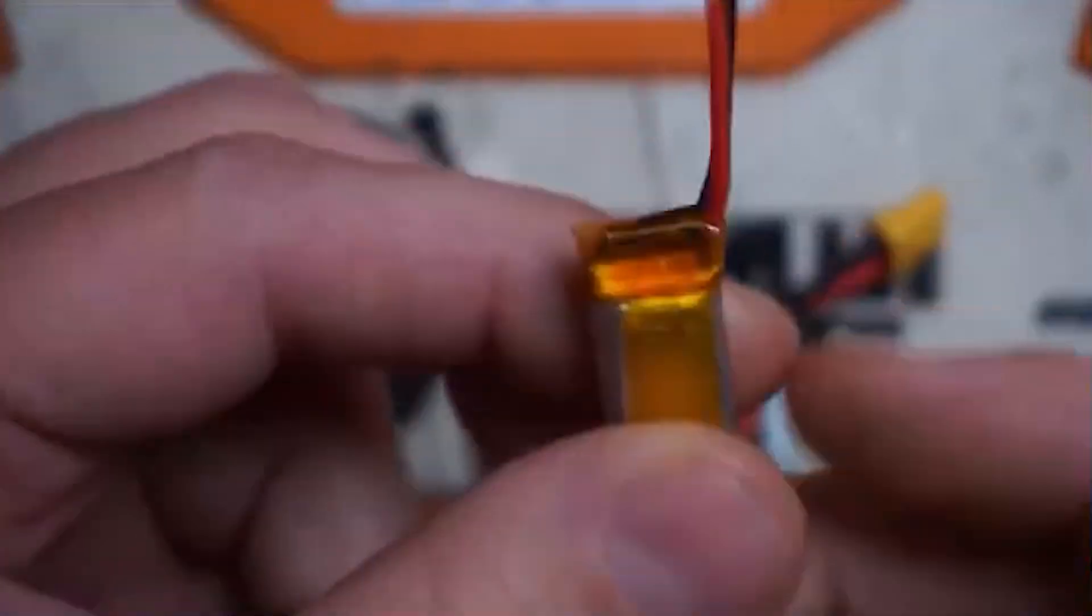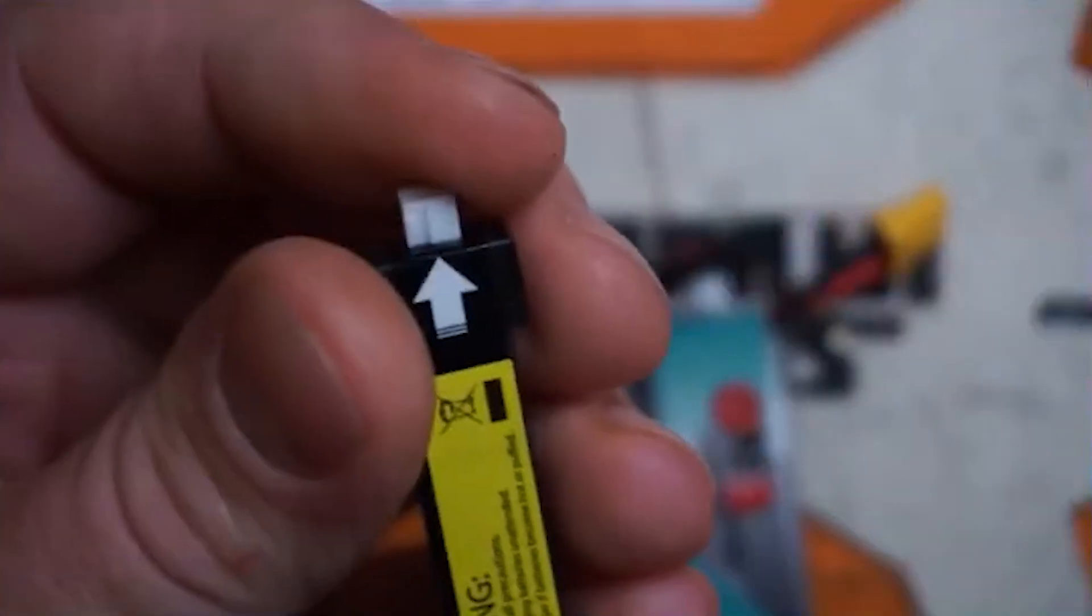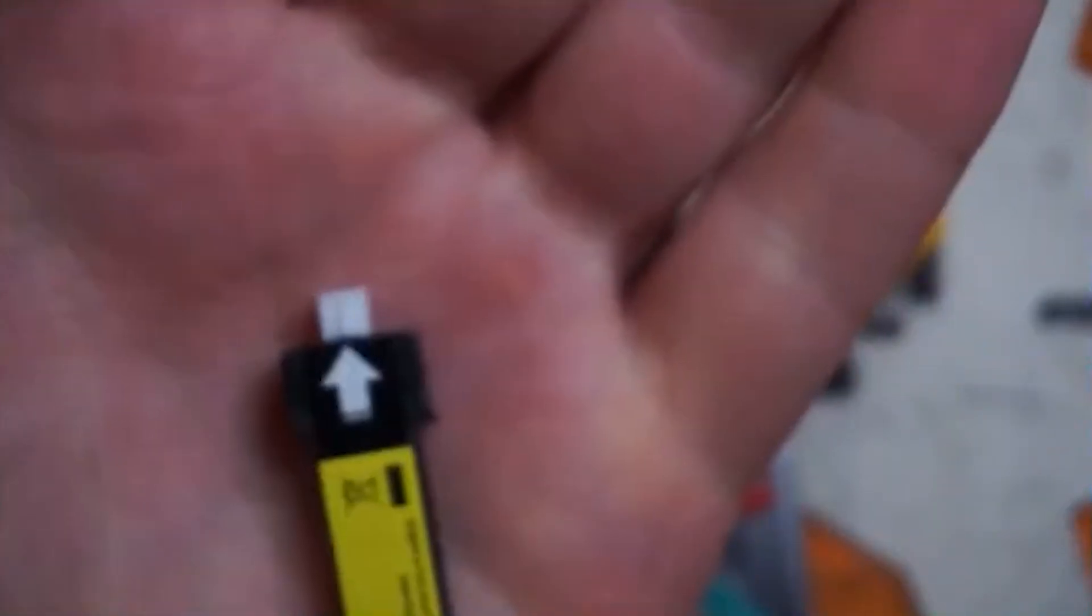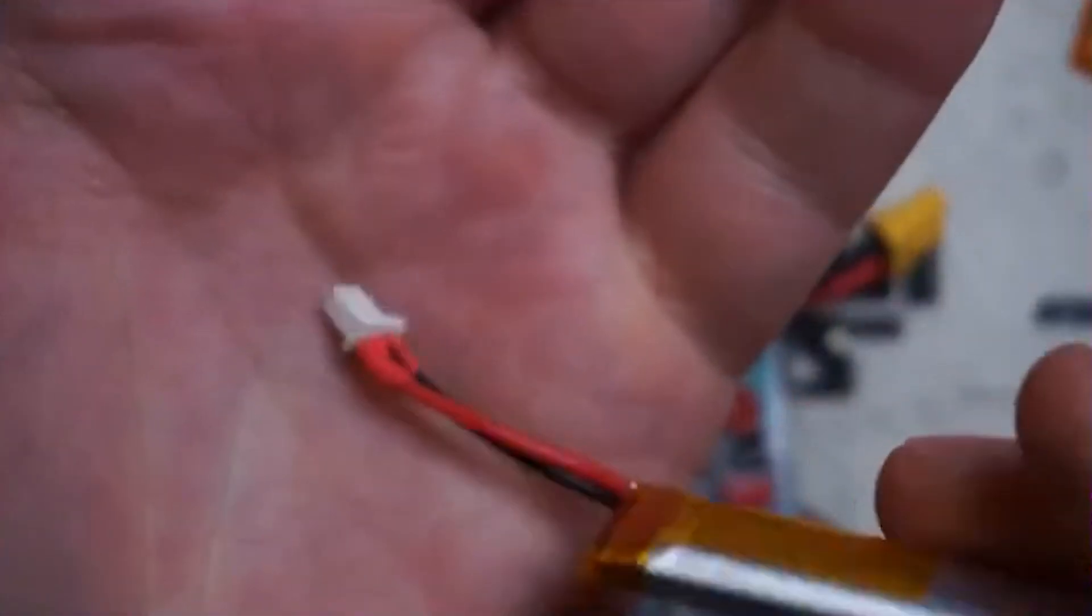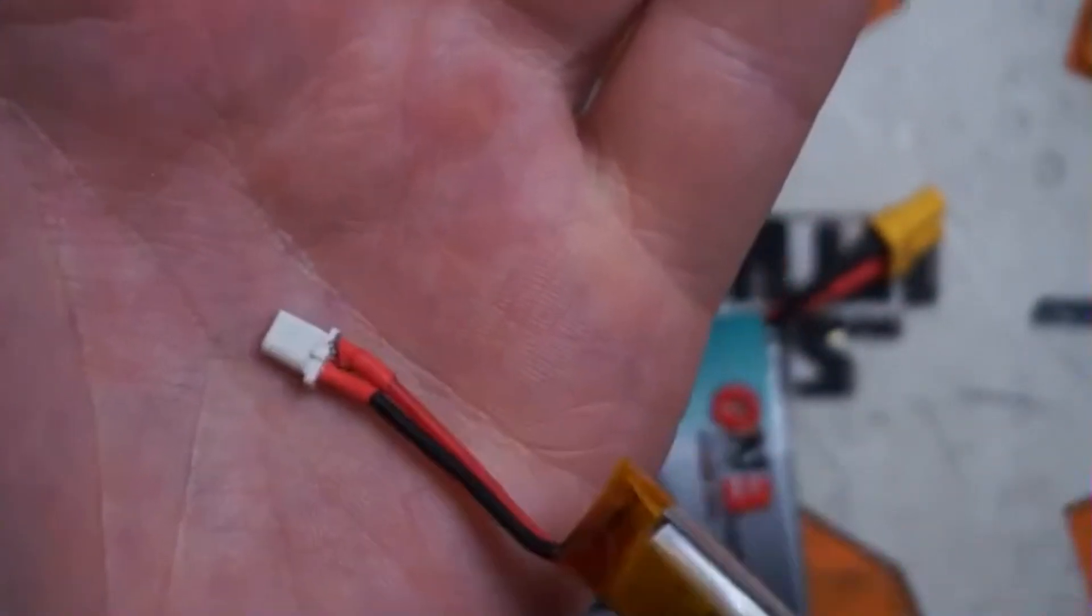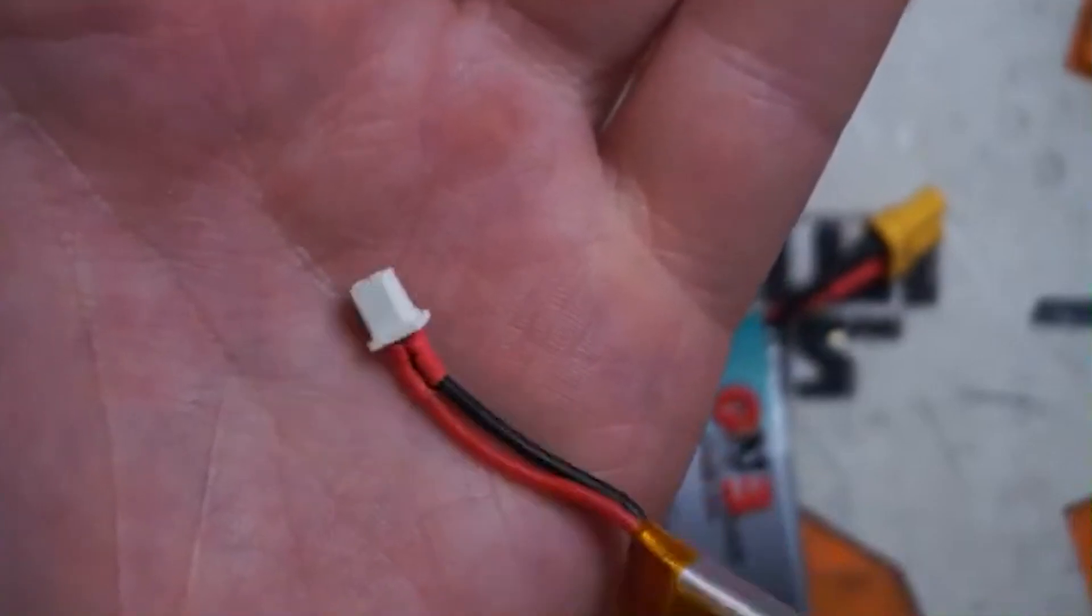There are other ones where it is mounted like this. Tattoo and I believe Newbie Drone are starting to make ones with the BT 2.0 connector on it. But this is a much more expensive connector for the manufacturers because they have to pay a royalty to Beta FPV, though it is a better connector than the PH 2.0.